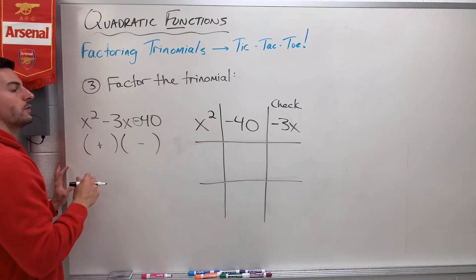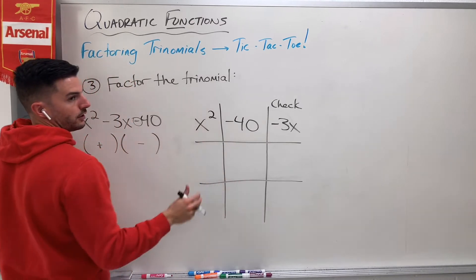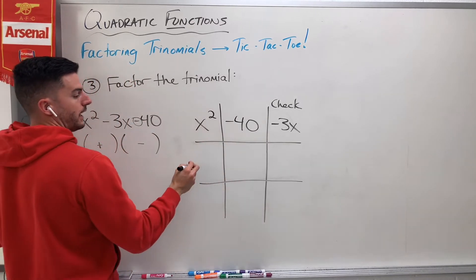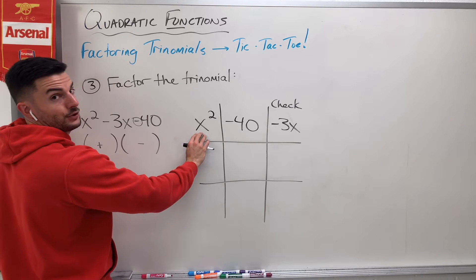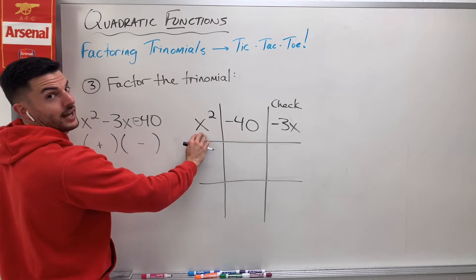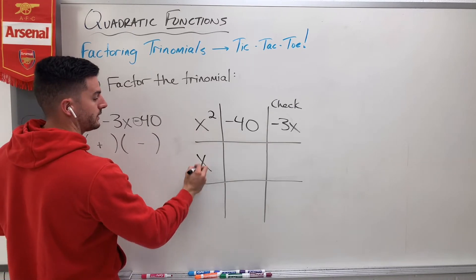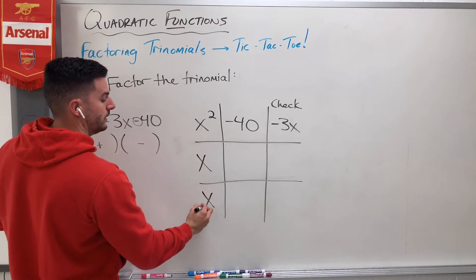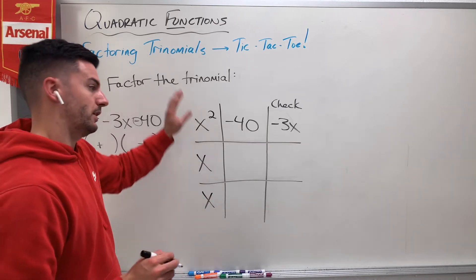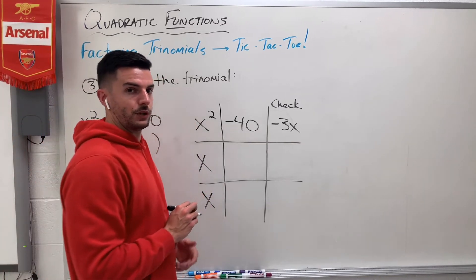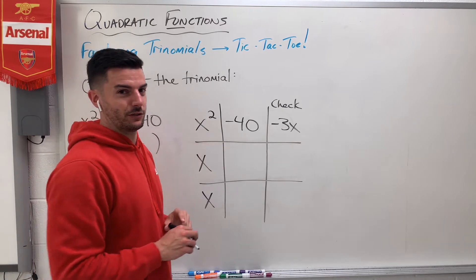So what do I do here? I'm going to fill in these boxes by figuring out — for this first column, it'll be what multiplies to give me x squared. And that's always just going to be x times x. x times x is x squared. That'll always be the case in that first column, unless there's a coefficient there, then it'll be a little different.